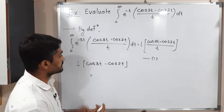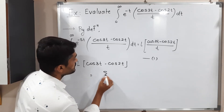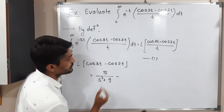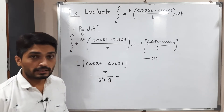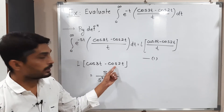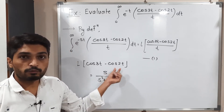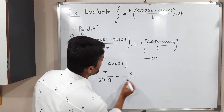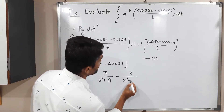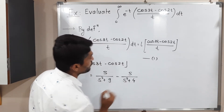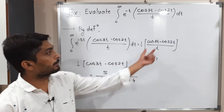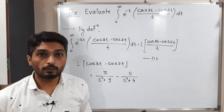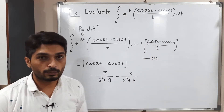The Laplace transform of cos 3t is s divided by (s² + 9), and by the same formula, the Laplace transform of cos 2t is s divided by (s² + 4). So we have now obtained the Laplace transform of the numerator.